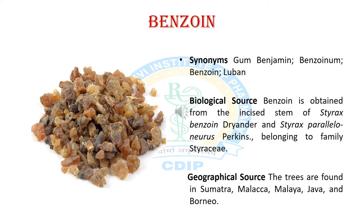Now we will discuss the first resin-containing crude drug, and it is Benjoin. The synonyms of Benjoin are Gum Benzamine, Benzonium, Benjoin and Luban. The biological source is that it is obtained from the incised stem of Styrax Benjoin, belonging to the family Styracaceae. The geographical source: the trees are found in Sumatra, Malacca, Malaya, Java and India.